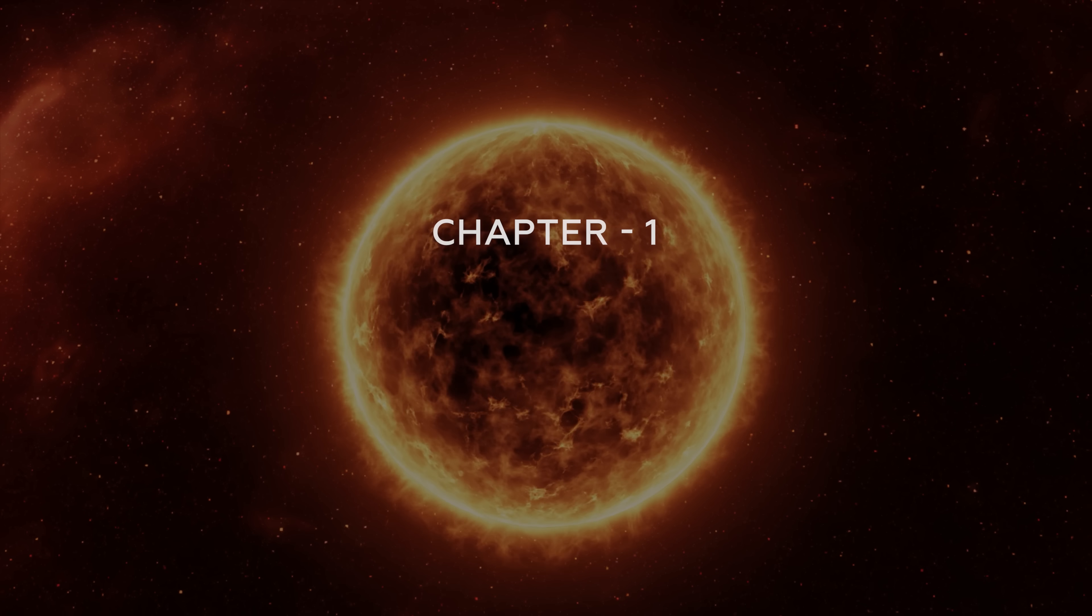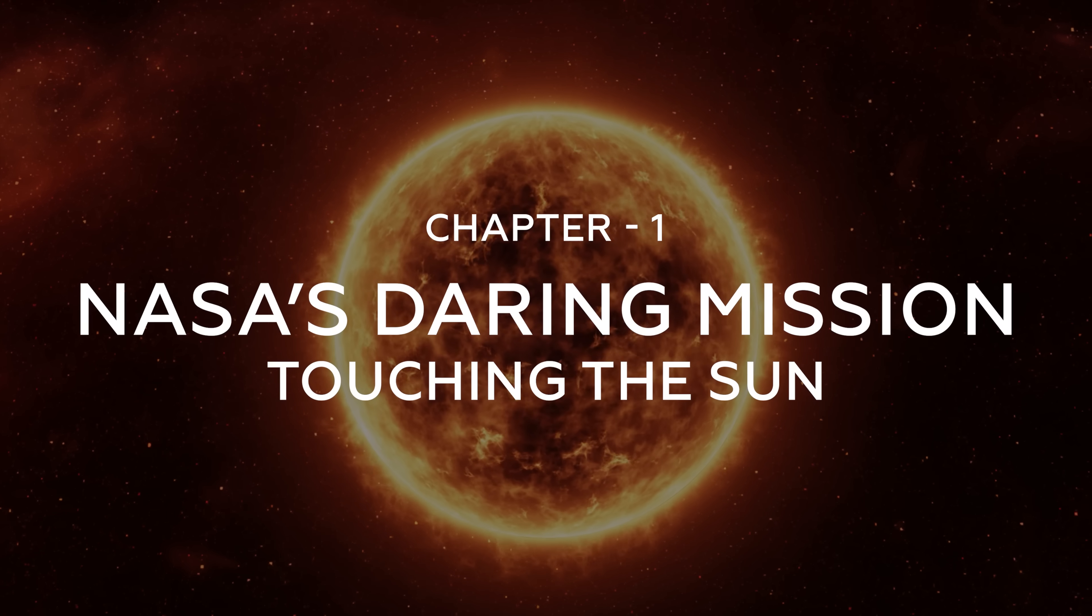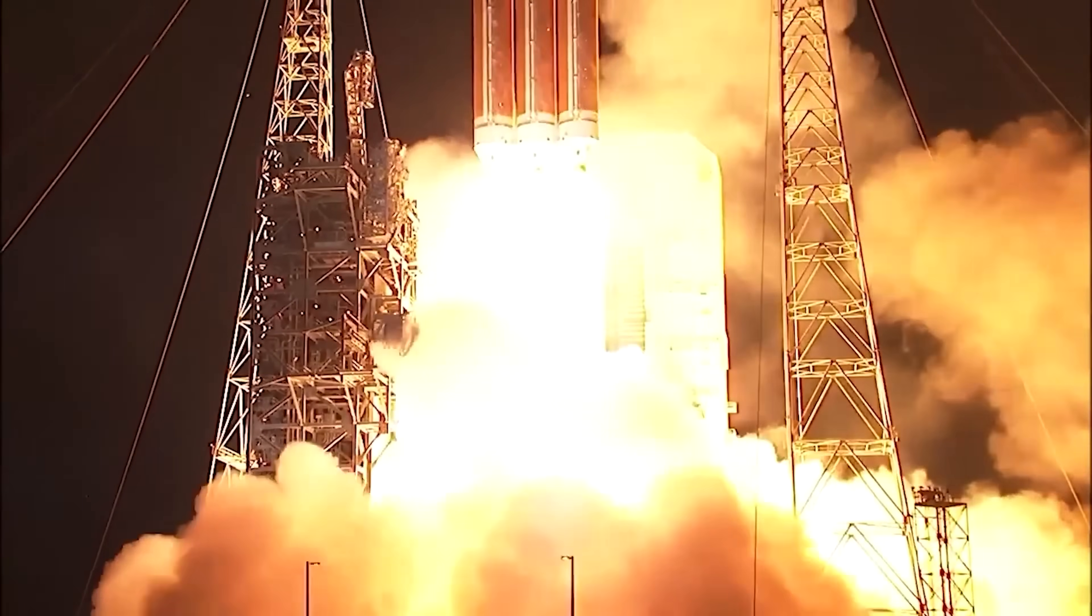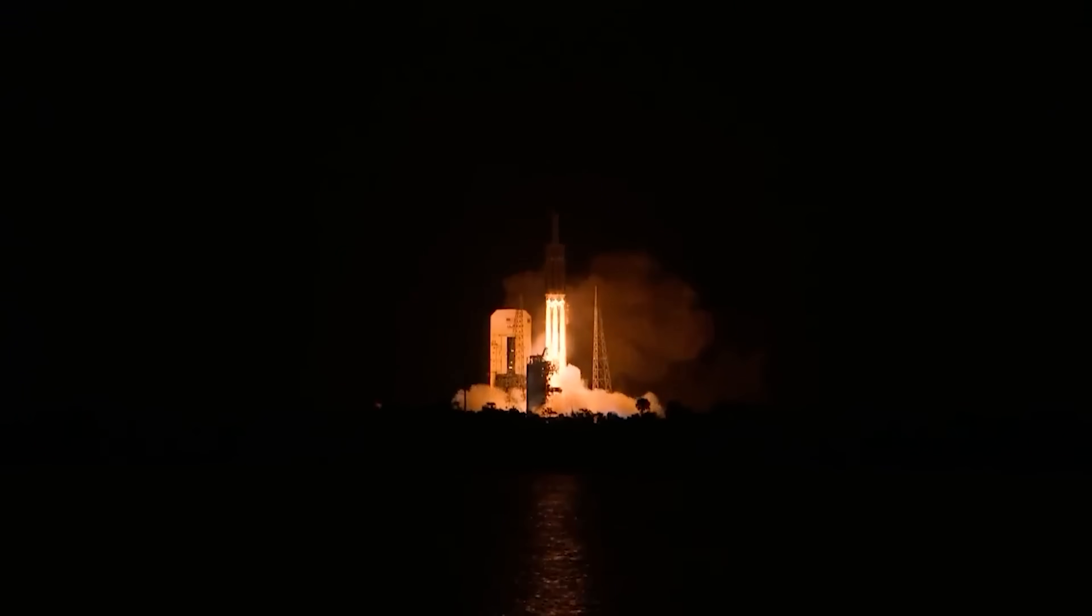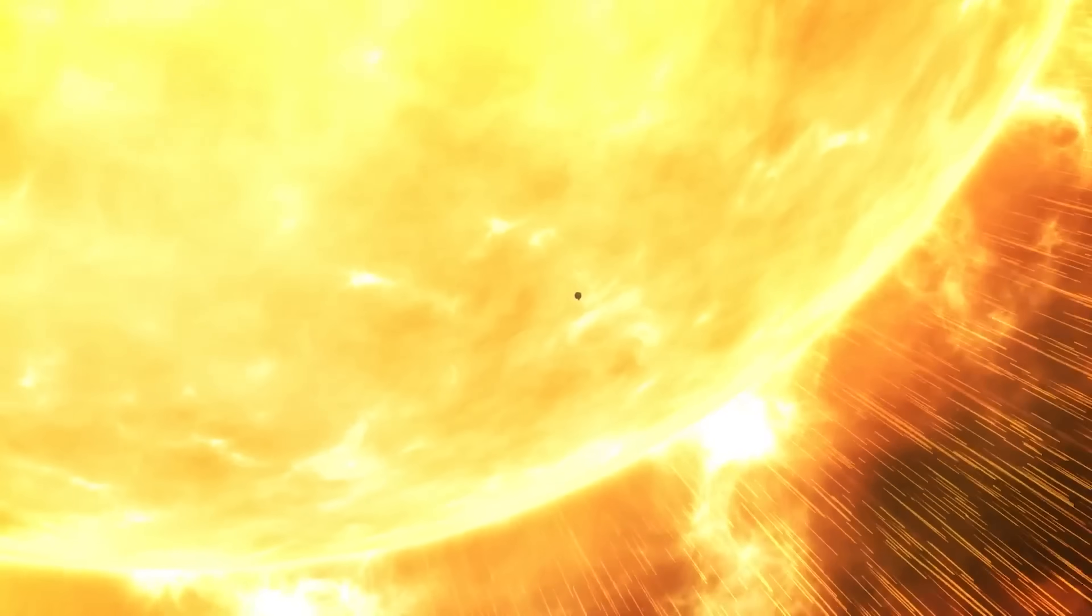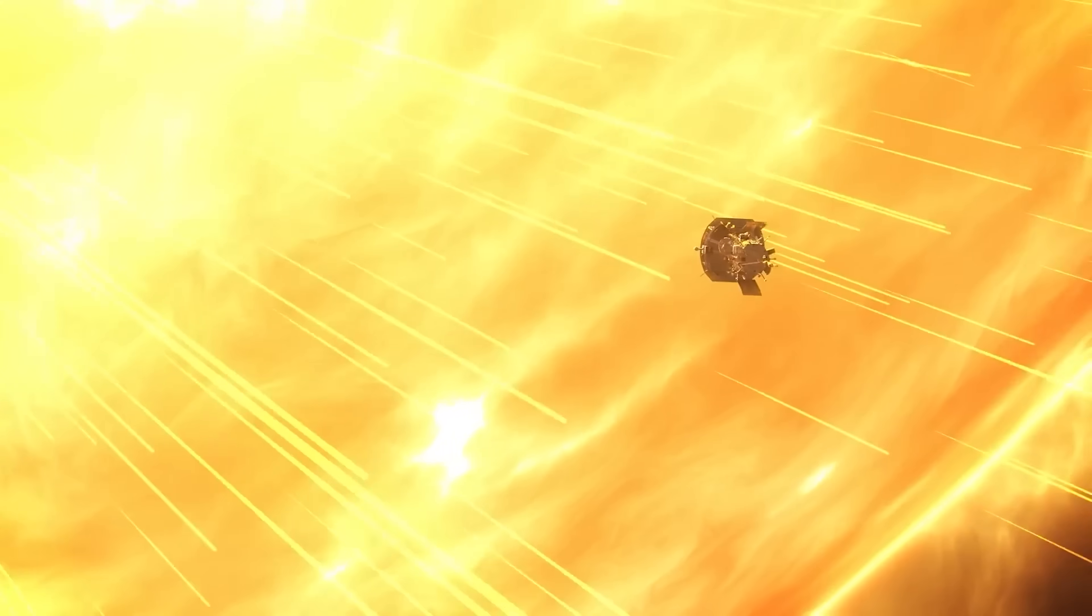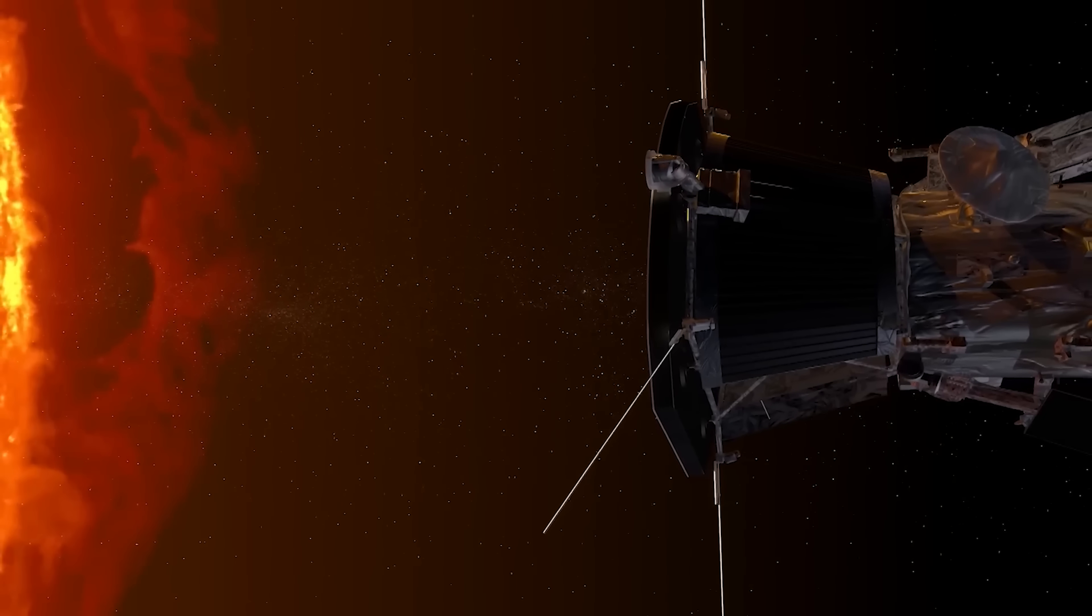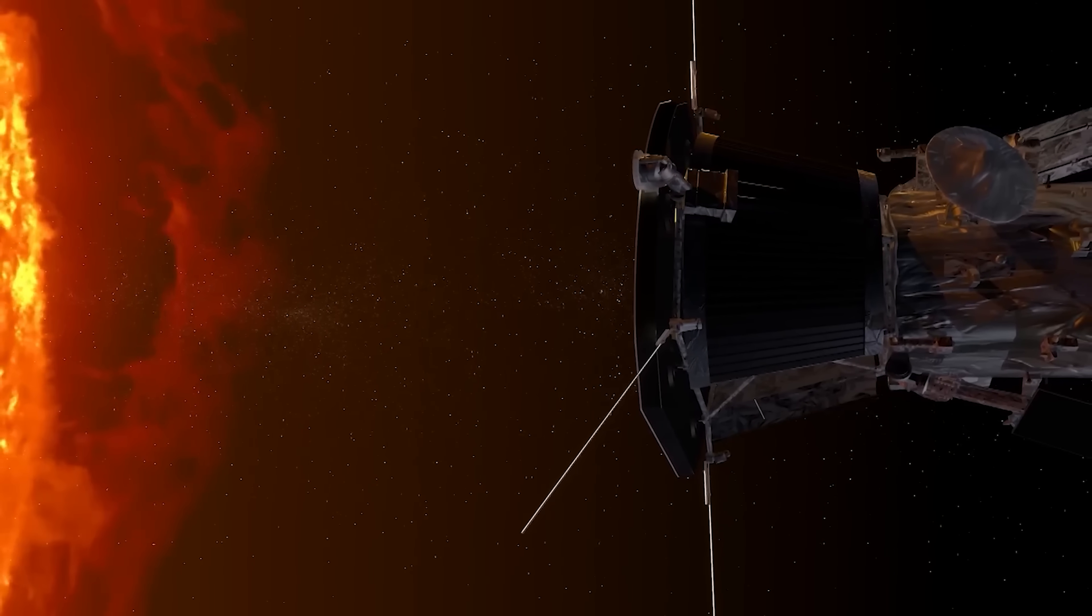Chapter 1: NASA's daring mission, touching the Sun. Alright, so let's start with something insane. NASA launched a spacecraft to touch the Sun. Not kinda close, not hovering nearby, I mean literally flying through the Sun's atmosphere. And it didn't melt. It didn't explode. It just kept going.